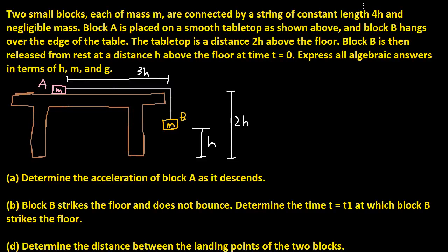Hello, and we have another problem regarding Newton's laws of motion. In this problem it says two blocks each of mass m are connected by a string of constant length. The diagram shows 3h, but it says 4h in the problem statement. The string has negligible mass.